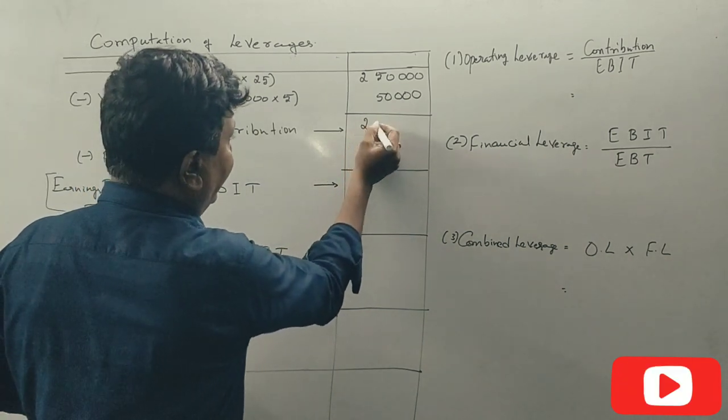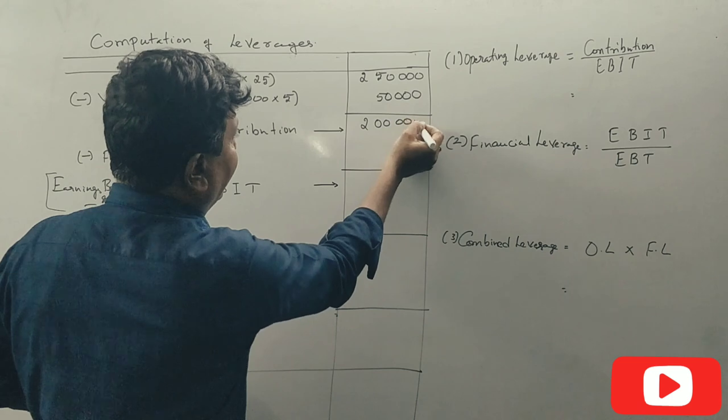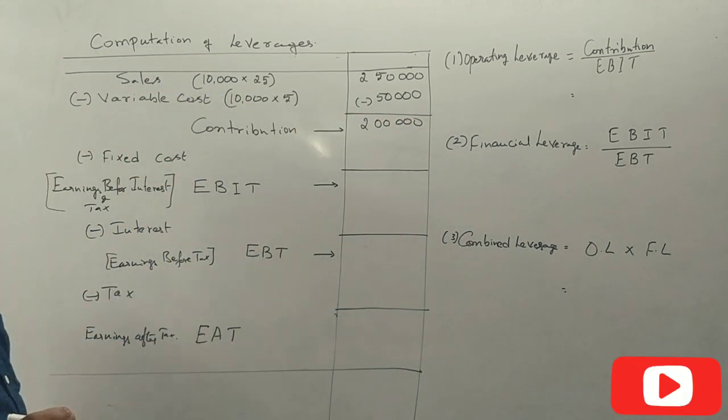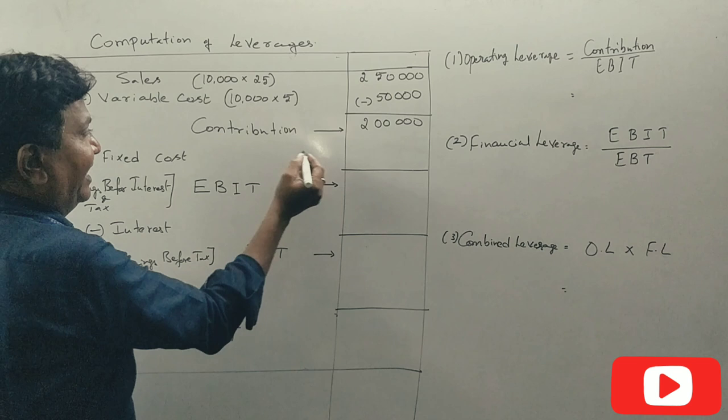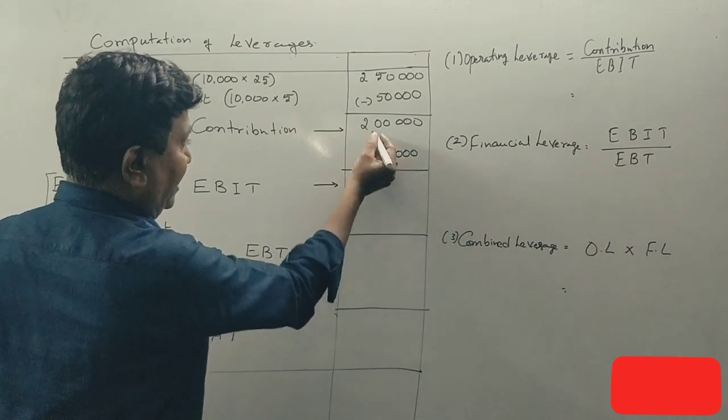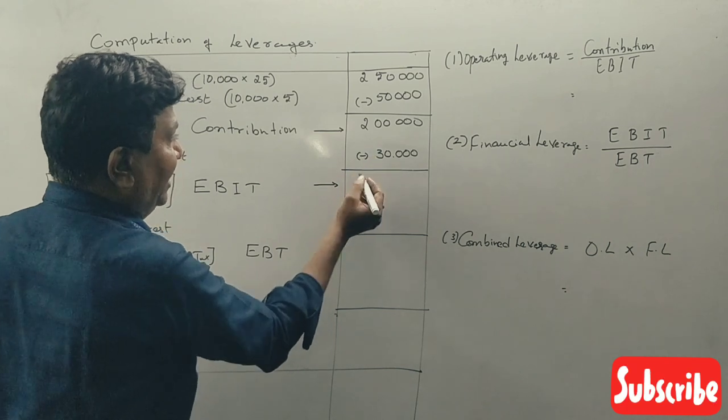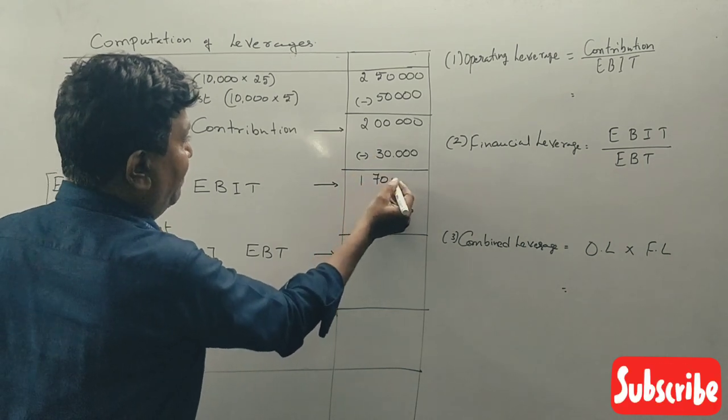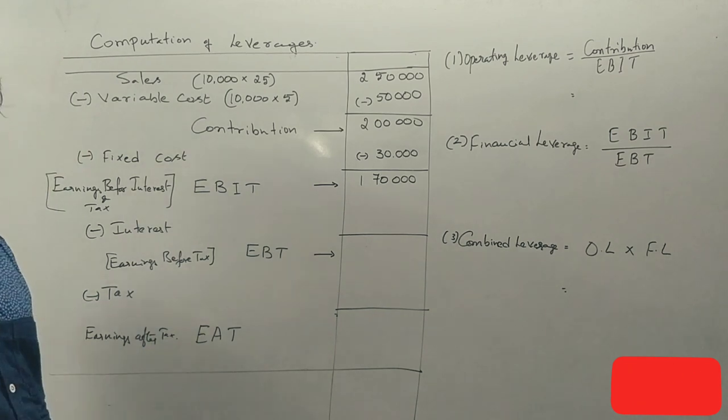Contribution is two lakh rupees. Minus fixed cost thirty thousand rupees. I will get EBIT of one lakh seventy thousand.